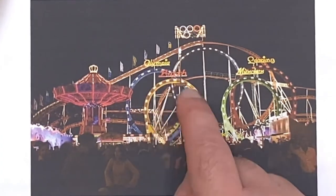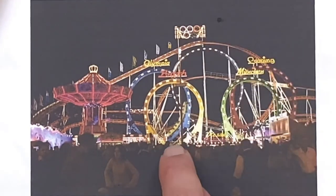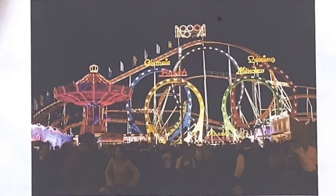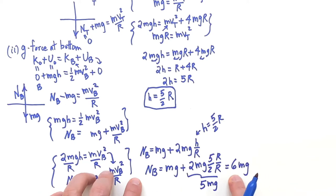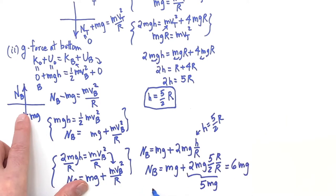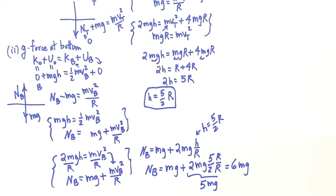The inverted teardrop shape is used to avoid the 6g's. Six g's — that's the g-force at the bottom if the loop were a perfect circle. This is a force: a scale would read this. The acceleration at the bottom would be 6g; per unit mass, whatever your mass is, the force is 6 times that. So they use the inverted teardrop to reduce this dangerous force.